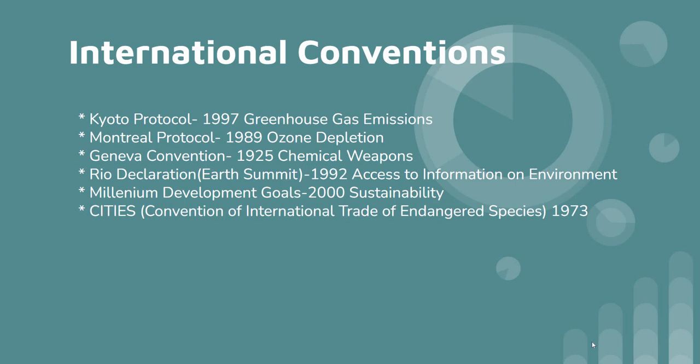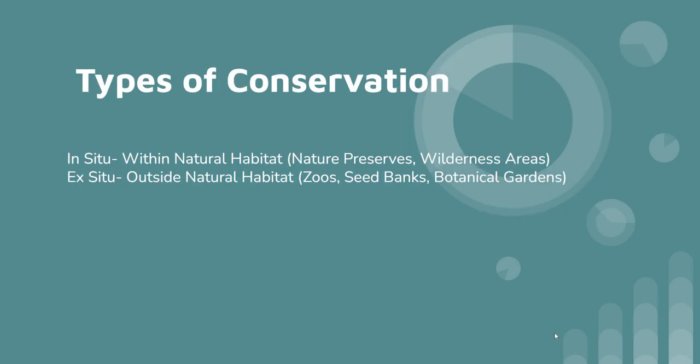What are the forms of legislation that these organizations try to enforce or watch over? We've already talked about the Montreal Protocol on ozone levels. Kyoto and more recently the Paris Agreement deal with greenhouse gases. We also talked about CITES, the Convention on International Trade in Endangered Species. These are all major international agreements, and they each have their pros and cons.